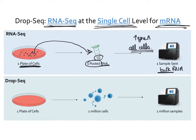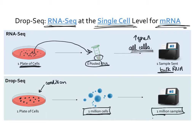DROP-seq is RNA-seq at the single-cell level. So now you have one plate of cells, all exposed to some condition you're interested in. But instead of pooling the RNA and sending it off for sequencing, you're actually going to take every single cell individually and send every single cell for sequencing individually. Rather than being a bulk measure, this is the individual measure of every single gene in every single cell.